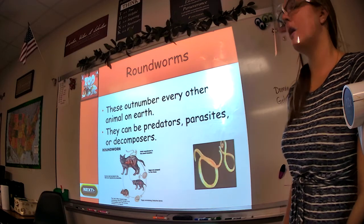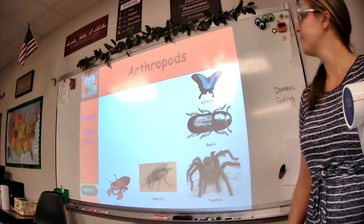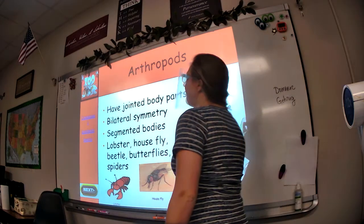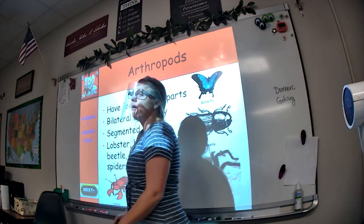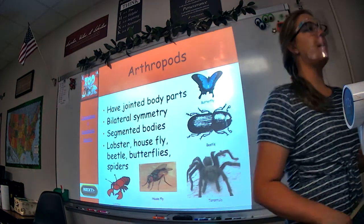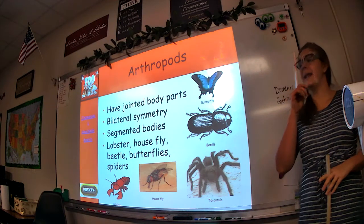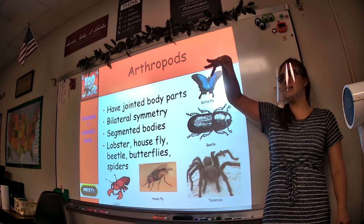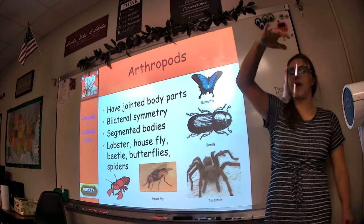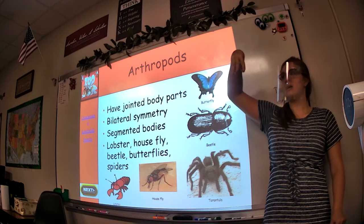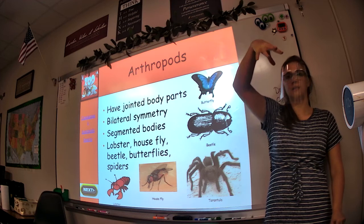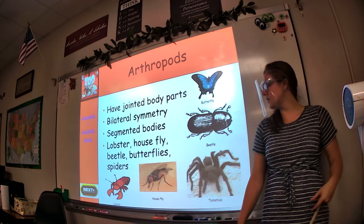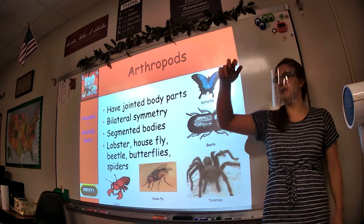Alright, we're going to do one more category: arthropods. This is the next phyla group. Arthropods are cool because they have jointed body parts. A spider does not move its legs stiffly — it doesn't have stick legs. It moves at joints. Those are jointed legs, as opposed to non-jointed stick legs. Same thing with lobsters and insects — they have joints where they can bend their legs.